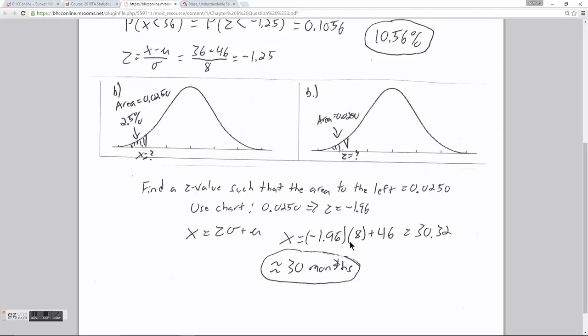Since the standard deviation is 8 months, I multiply that by negative 1.96 and then add it to 46. It turns into a subtraction since I have a negative z value, and I get an x value of 30.32. If the company guaranteed the batteries for 30.32 months, they would only replace 2.5% of them. They would probably round that off to 30 months, just to squeeze a little extra out of it.